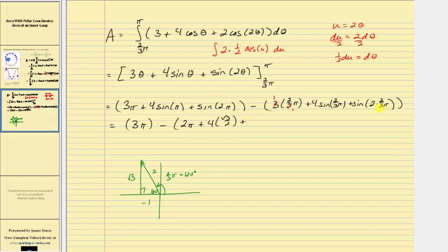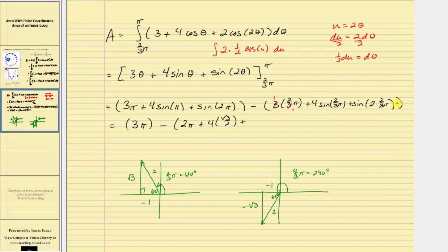And then we have plus sine four thirds pi, which equals 240 degrees. The terminal side is in the third quadrant with a 60-degree reference angle. So again we have sides one, two, and square root three. Both x and y are negative in the third quadrant, so this is negative one and this is negative square root three. The sine of four thirds pi radians equals the ratio of the opposite side to the hypotenuse, which is negative square root three divided by two, giving us minus square root three divided by two.